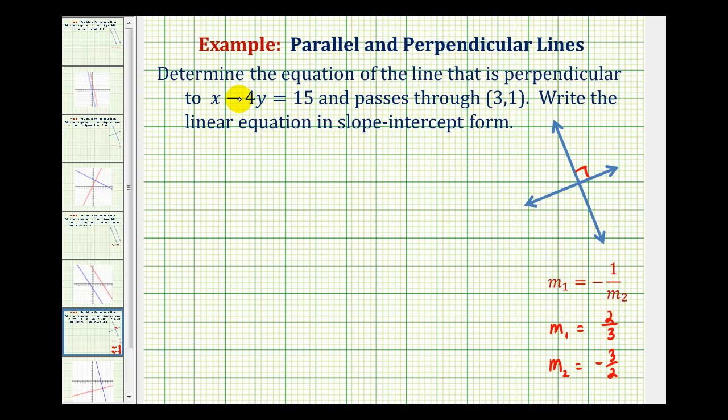So our first step is going to be to determine the slope of the given line by writing this equation in slope-intercept form, or the form y equals mx plus b, where m is the slope of the line.